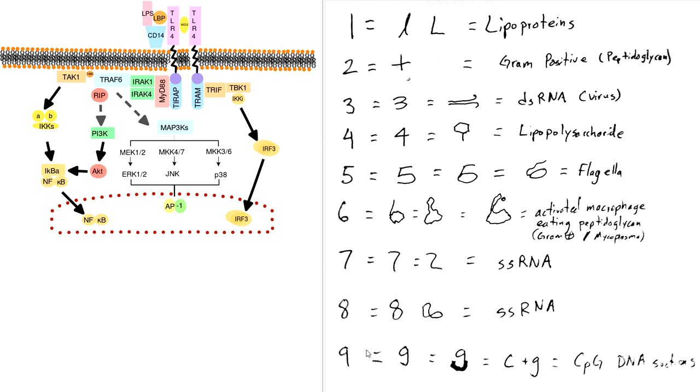And finally number nine we have, if you draw the nine with a little hook on the bottom, sometimes on a keyboard you'll see that the nine has a little hook on the bottom. Looks like a C on the bottom and the whole thing looks like a G. So you can kind of see there's a C here and then there's a G. And so you can remember it's C and G for CpG DNA sections. So this binds to CpG DNA sections.